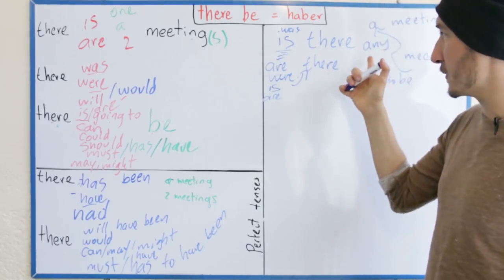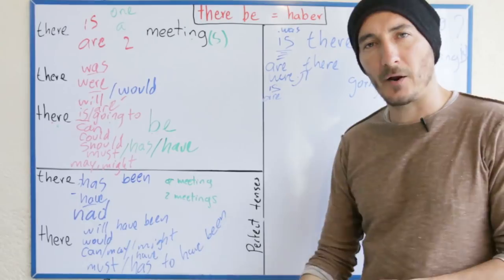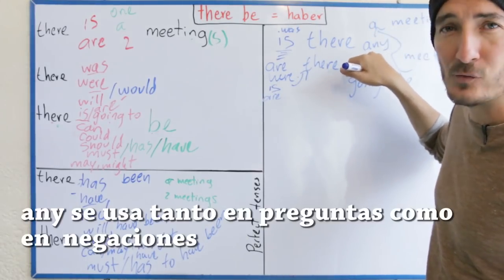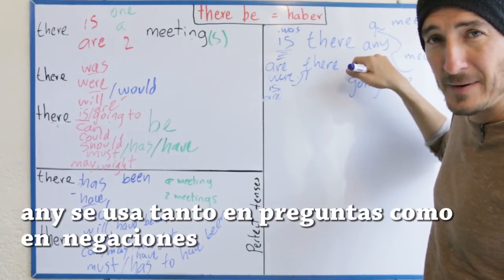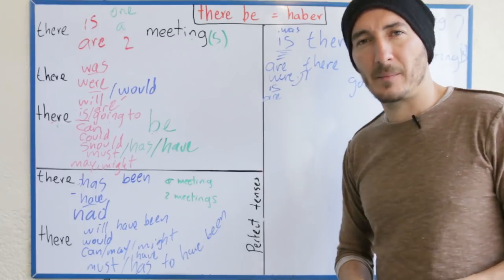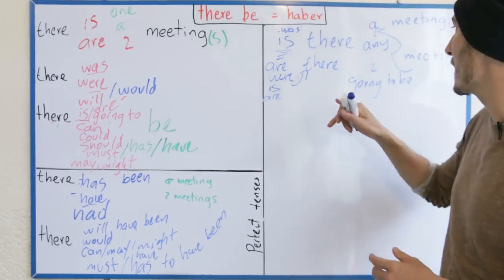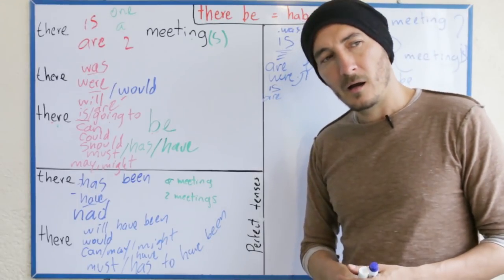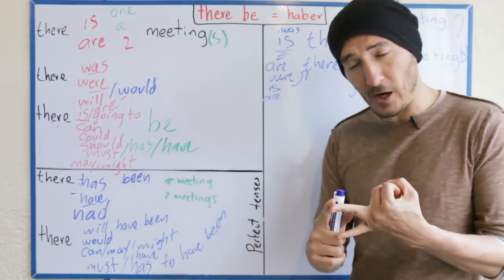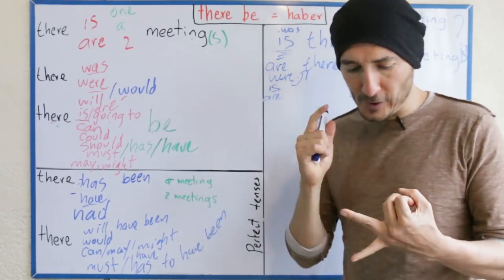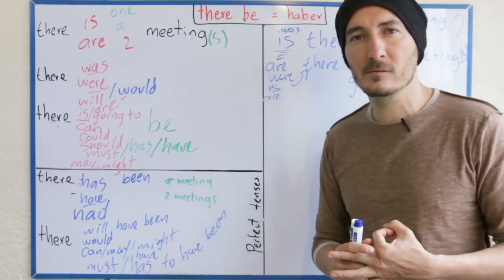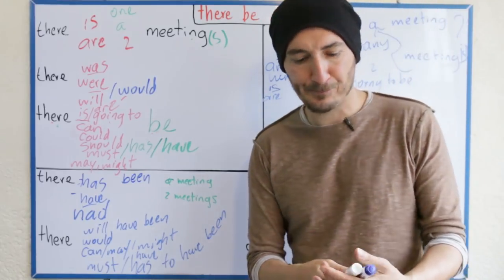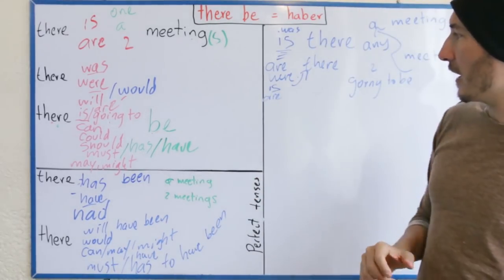Is there any meeting? No tiene que ser solamente en el plural — lo utilizo para ambos. Is there any meeting? Are there any meetings? Is there a meeting? Is there one meeting? ¿Hay una reunión? ¿Hay alguna reunión? Are there two meetings? Are there any meetings? ¿Habría alguna reunión? Would there be any meetings? Con estos auxiliares, recuerden que no tienen plural — son invariables. No importa si es uno o si son varios, sería todo igual.